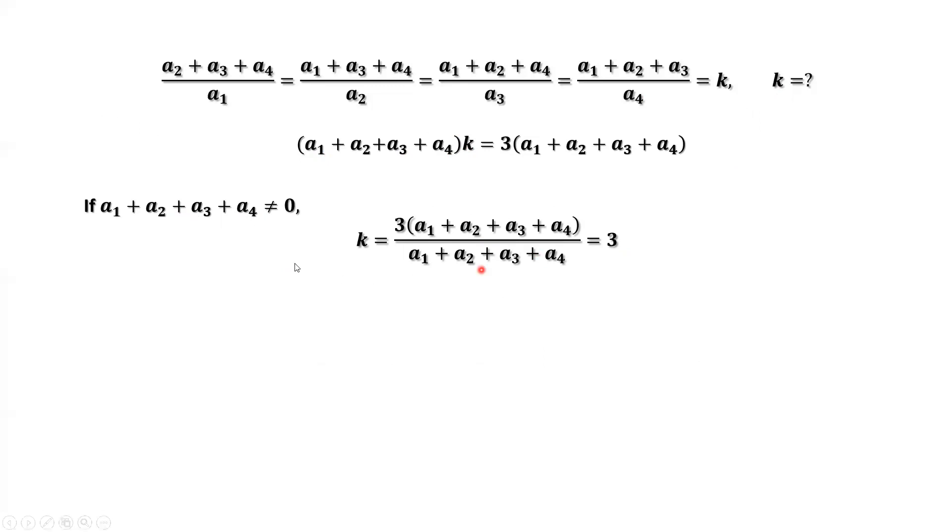We have another situation. If it is 0, if A1 plus A2 plus A3 plus A4 equals 0, from this equation we have A1 plus A2 plus A3 equals negative A4. We move A4 to the right-hand side. We use the last condition.